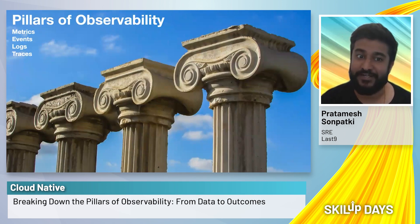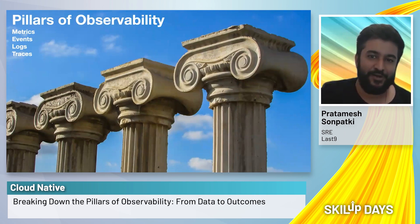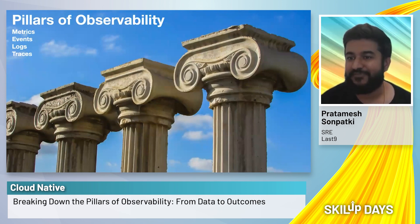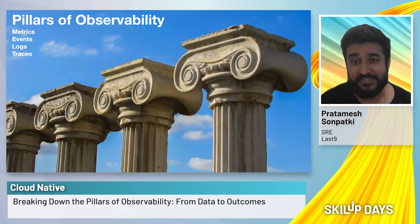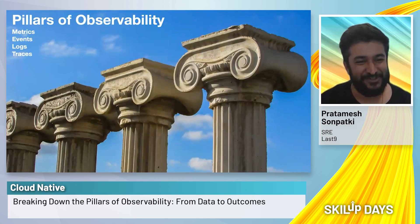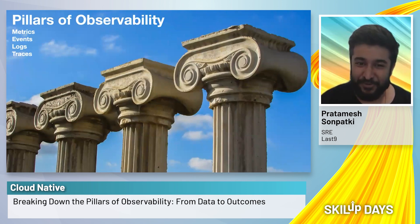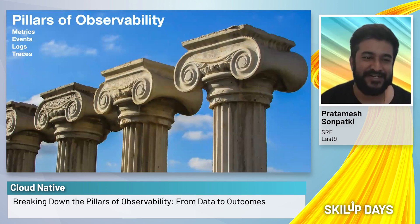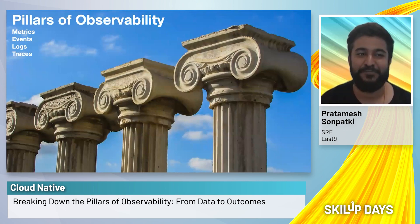Metrics, logs, events, and traces are called the pillars of observability because they define the backbone on which the rest of our observability suite is built. They are the fundamental data types that systems can emit about themselves, used to infer the state of the system. If you're not already aware, MELT is slightly outdated these days. There is also a TEMPL acronym which covers exceptions and profiling apart from metrics, logs, events, and traces. All of these telemetry data types form the backbone on which a lot of observability and monitoring systems are built today.